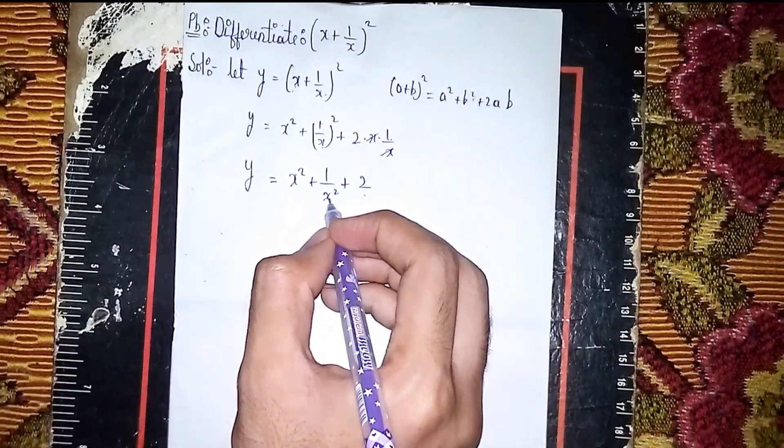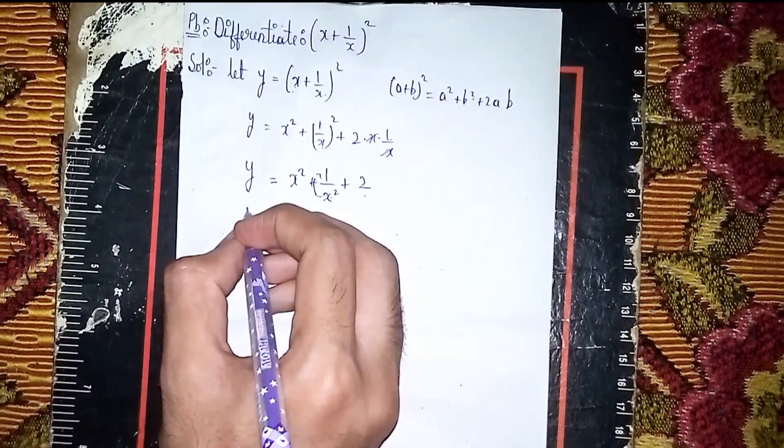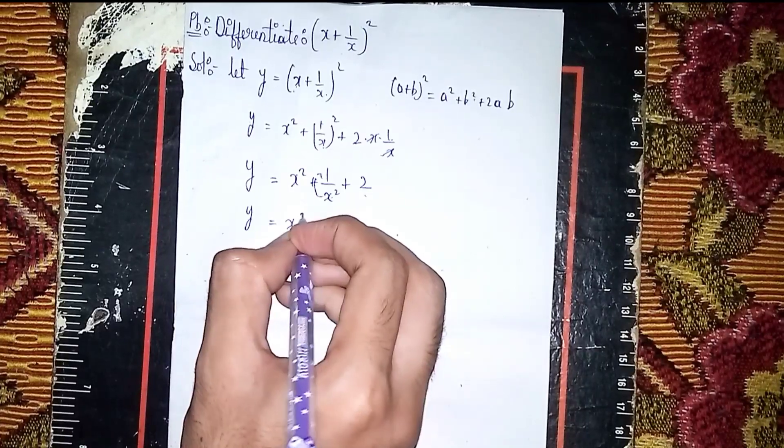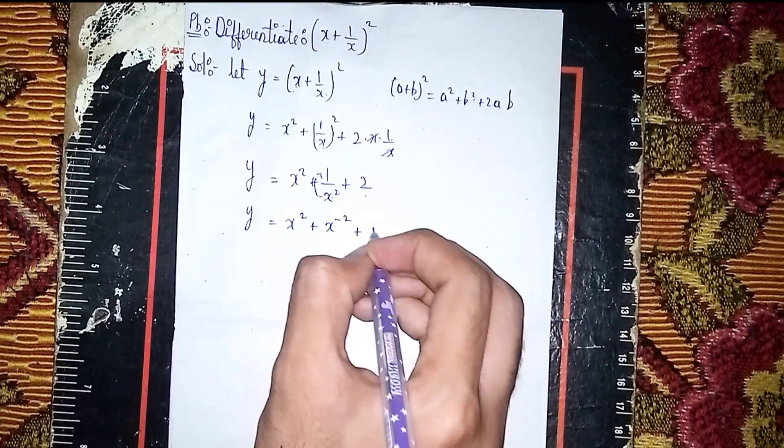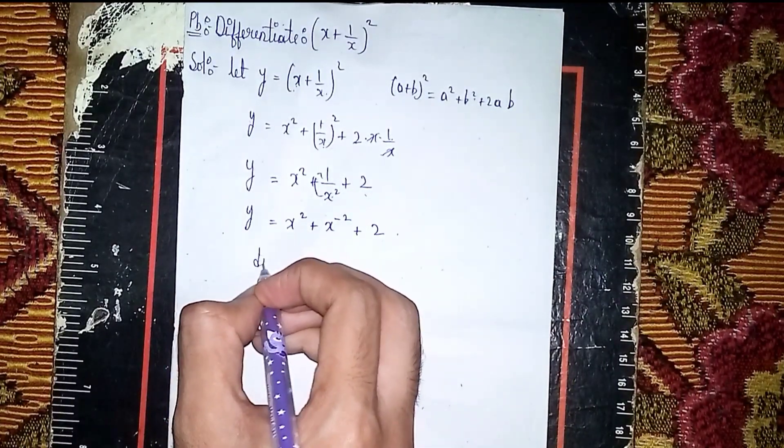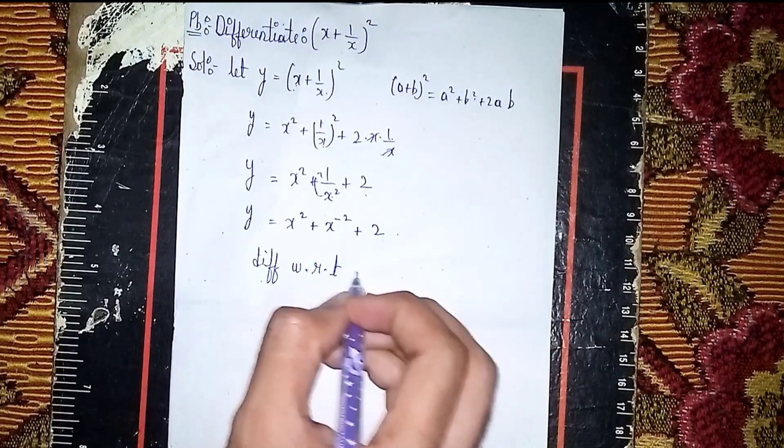Now send this 1/x² to upside to become inverse. So y equals x² plus x^(-2) plus 2. Now differentiate with respect to x on both sides.